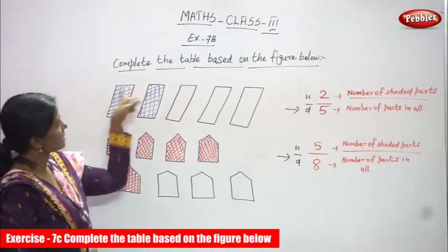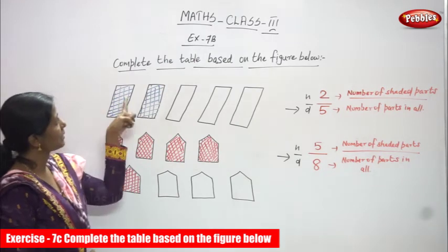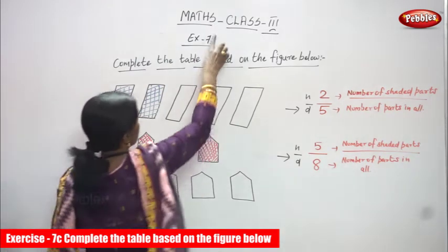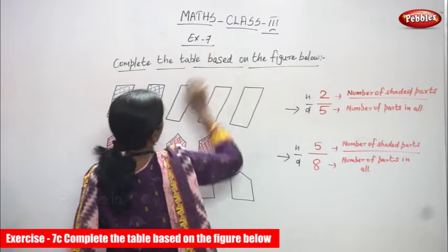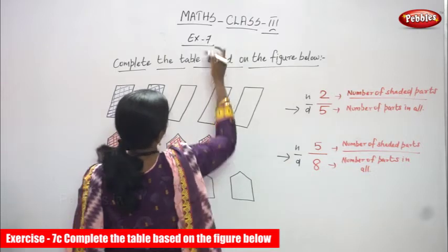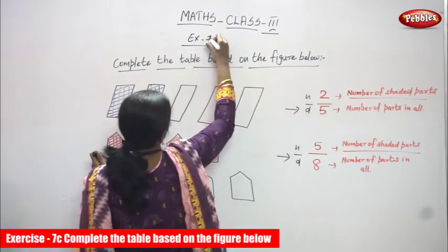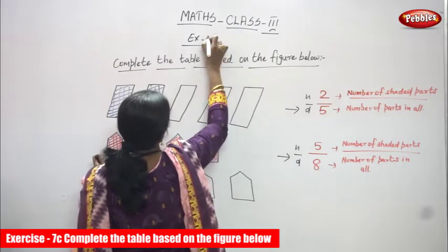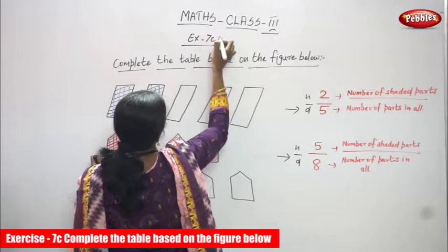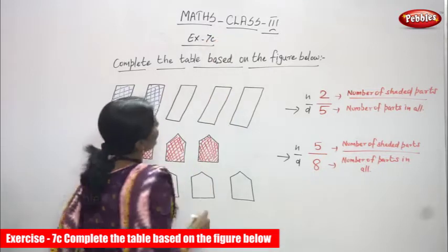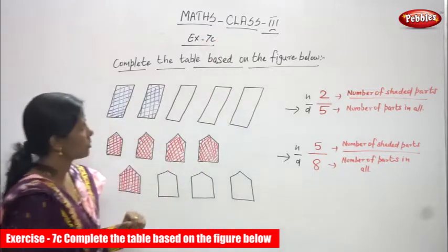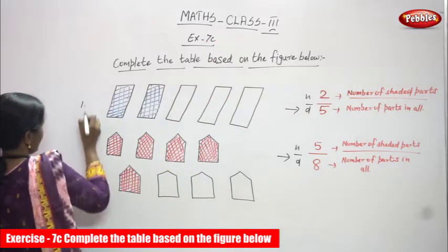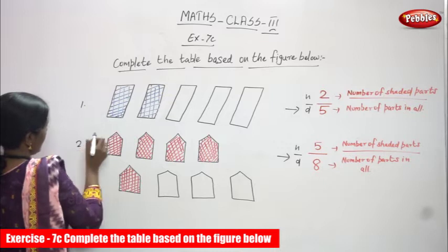XY7B complete — it's not 7B, it's 7C. Okay, complete the table based on the figure below. This is the first diagram, this is the second diagram.